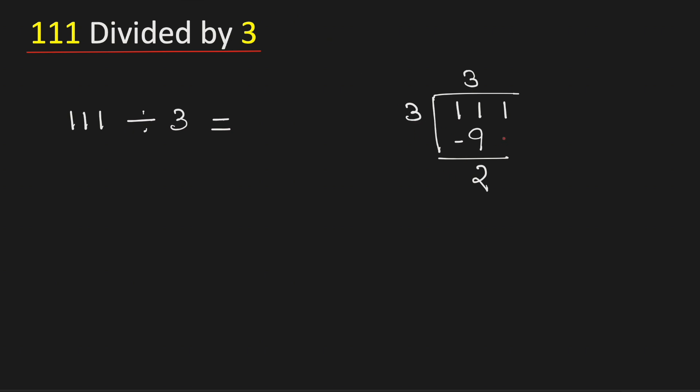As 2 is less than 3, we will bring down this number 1 here. Now we know that 3 times 7 is 21.